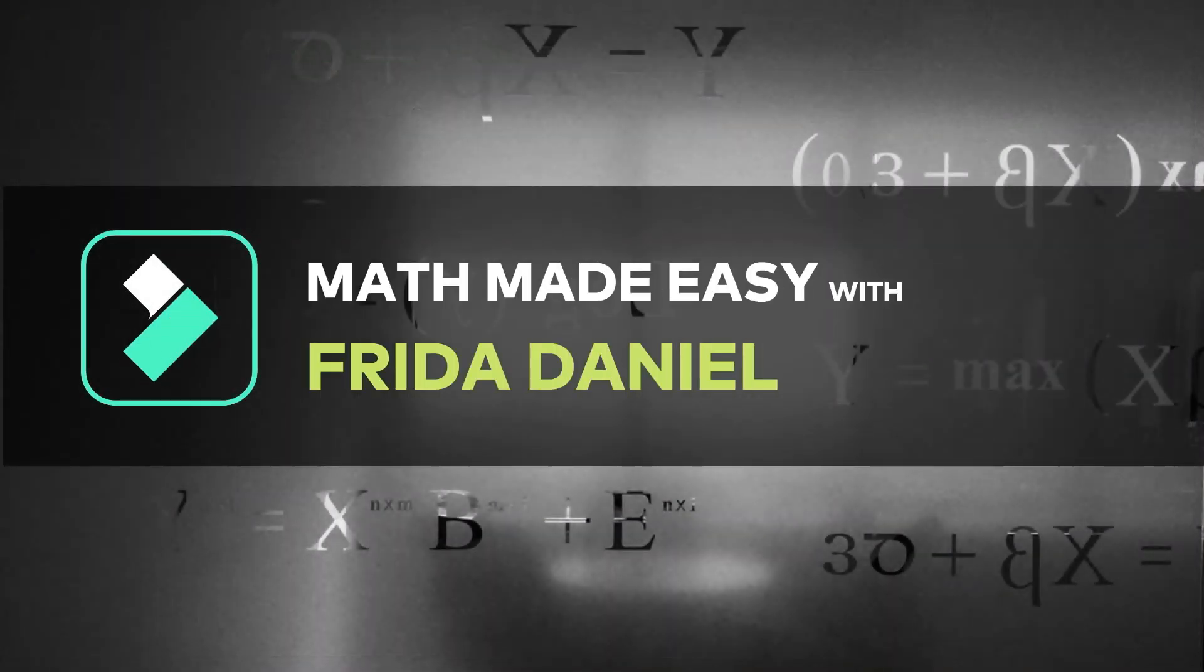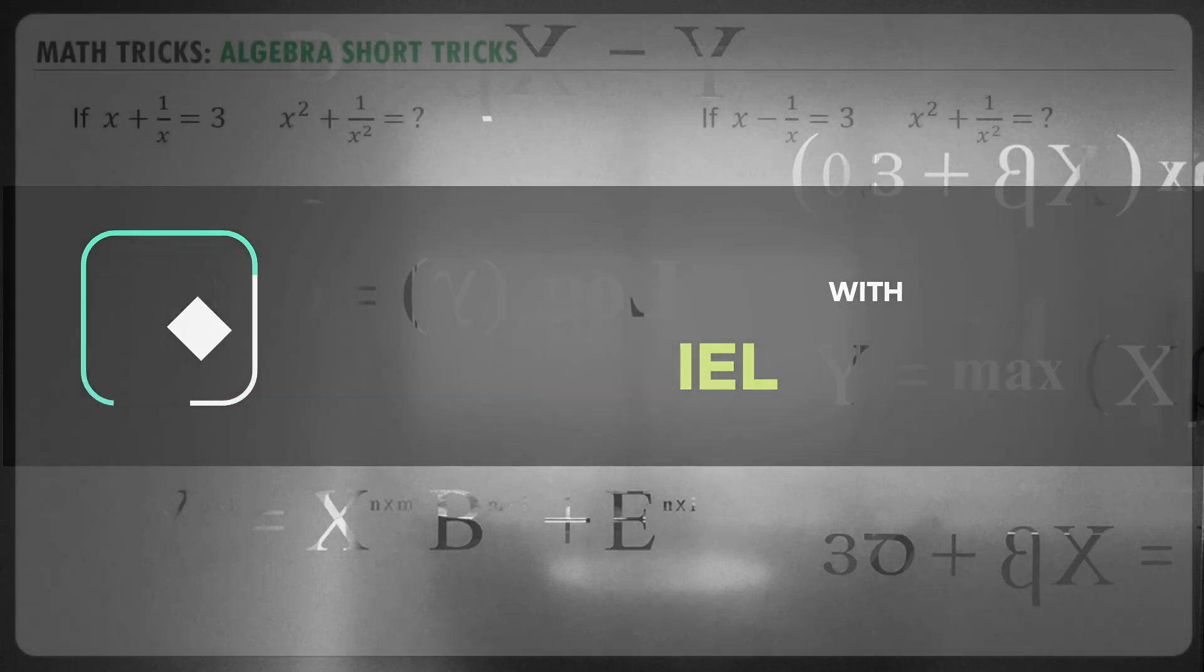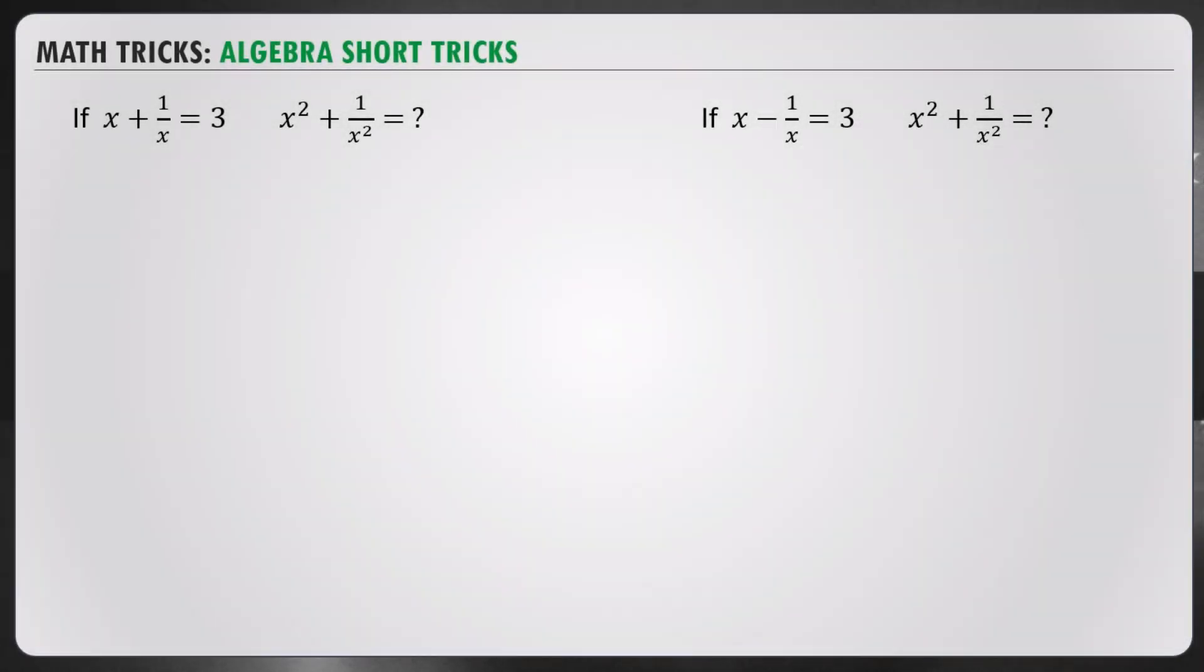Let's start with the first one. We're given x plus 1 over x is equal to 3, and x squared plus 1 over x squared is equal to what? Normally, I'll show you how we're usually supposed to solve this.